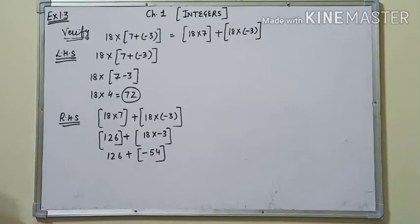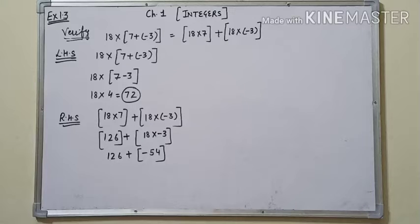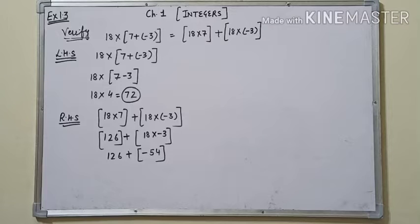कल मैंने आपको बताया था कि जब हमारे पास एक ही minus का sign होता है, तो answer negative में आता है। Two signs होंगे तो positive में आएगा। मतलब अगर number of signs even है — 2, 4, 6 — तो answer positive आता है। अगर number of signs odd है — 1, 3, 5, 7 — तो answer negative आता है।